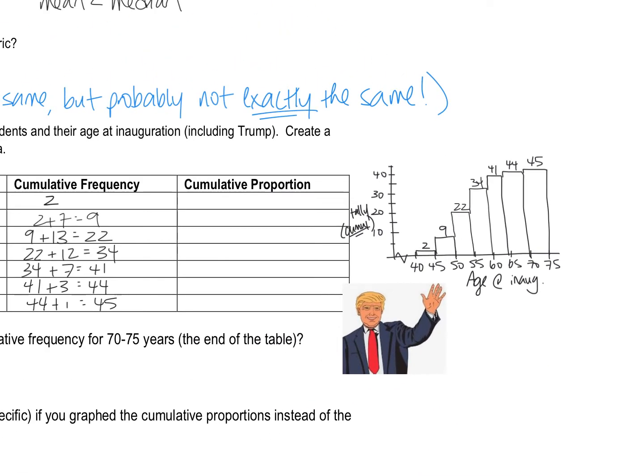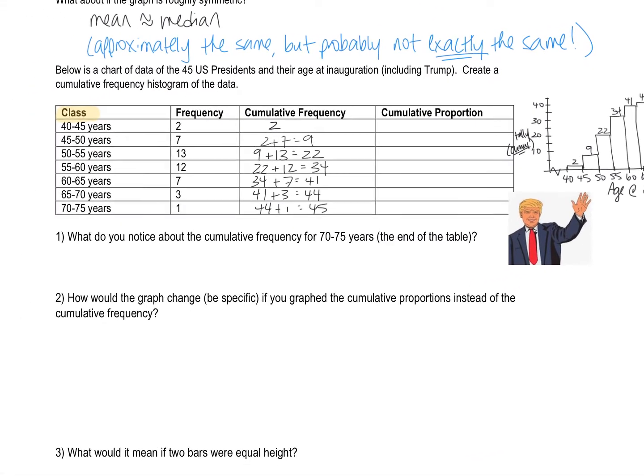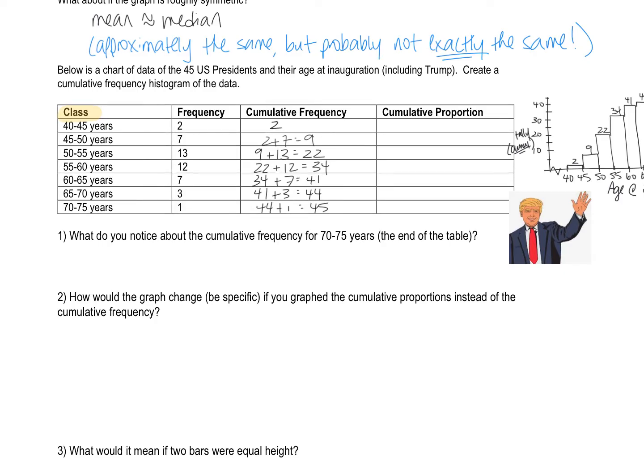Now let's answer a couple of questions here. What do I notice about the cumulative frequency for 70 to 75 years? It equals 45. That's what I want you guys to notice, it equals 45, and that is the total number of presidents. That's always how it's going to be. It represents the total number of presidents because all 45 of the presidents the United States have had have been 75 years or younger. And so that is what that 45 means.